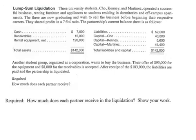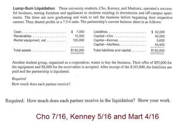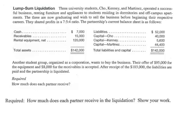All you have to do is add it up and each person gets a fraction. Seven, five, and four together would be 16. So Cho gets seven sixteenths, Kenny five sixteenths, Martinez four sixteenths. You've got to get comfortable working with those kinds of fractions.